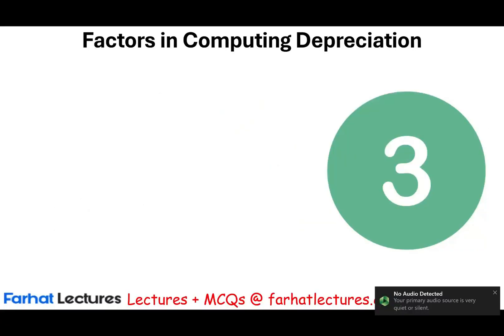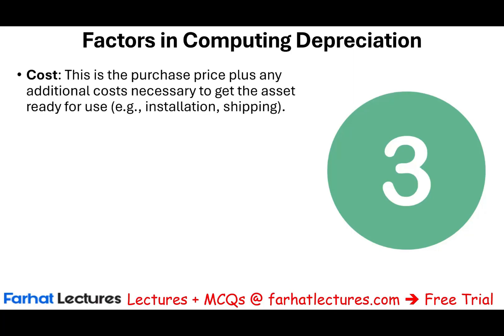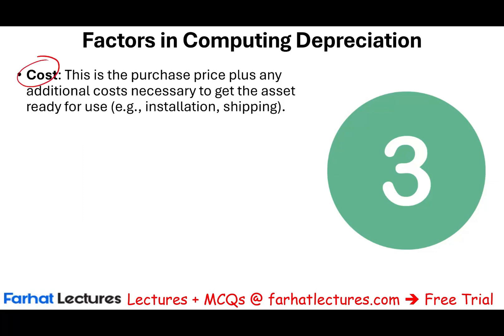Let us start by looking at the factors — the elements that we need in order to compute depreciation. You need three factors to compute depreciation, though you could do it with two if the third isn't available. The first factor is cost. This is what we looked at in the prior session — determining the cost of an asset. It's the purchase price plus any additional cost necessary to get the asset ready for its intended use, like transportation, installation, shipping taxes, and so on.